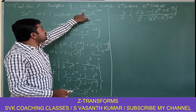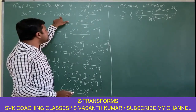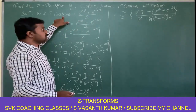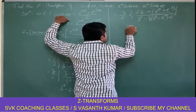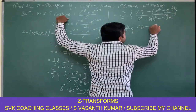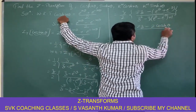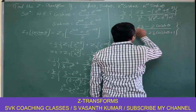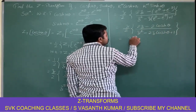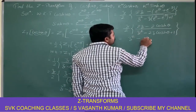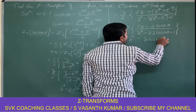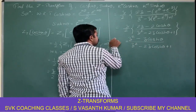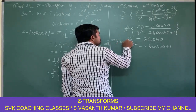Now we know that e power n theta plus e power minus n theta divided by 2 is cosh(nθ), so e power theta plus e power minus theta can be written as 2 cosh(θ). Applying that definition, we can rewrite the expression as z by 2 times of 2z minus 2 cosh(θ), all divided by z squared minus 2z cosh(θ) plus 1. Multiplying z by 2 into the numerator, the 2's cancel and we get z squared minus z cosh(θ) all divided by z squared minus 2z cosh(θ) plus 1. This is the Z transform of cosh(nθ).